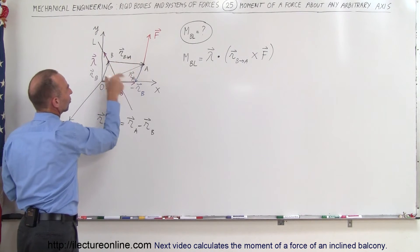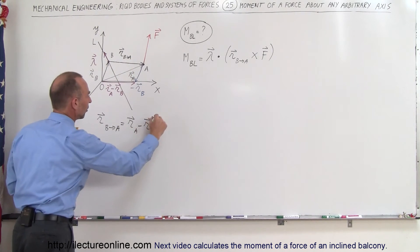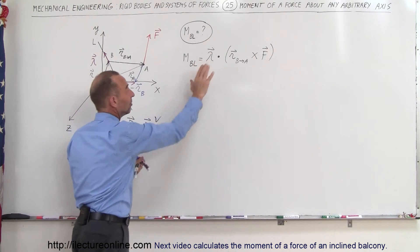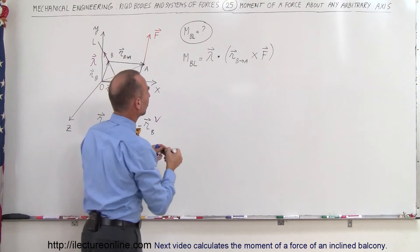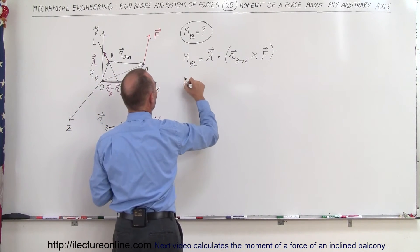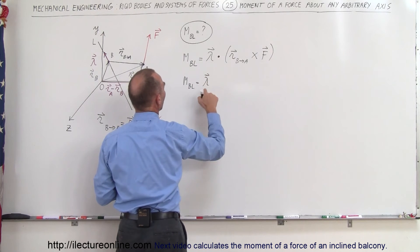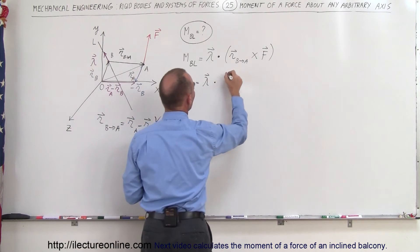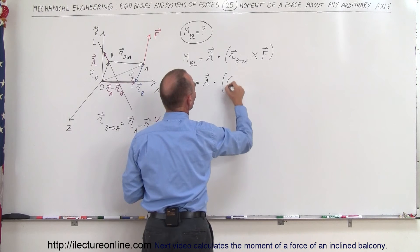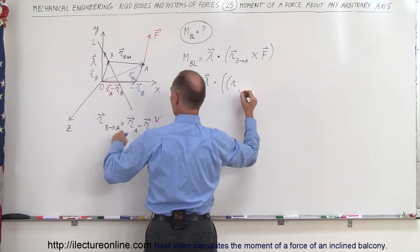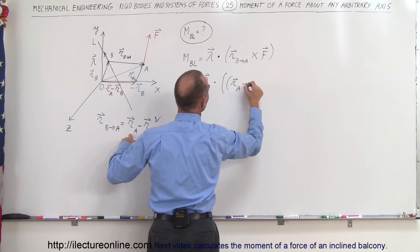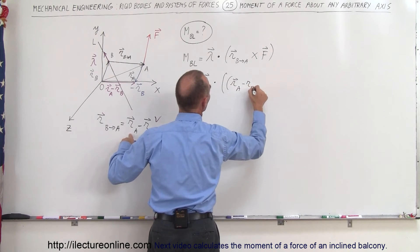This is the exact same vector just in a different location, so this does indeed check out. That means we can write the expression as: M_BL equals the unit vector along the arbitrary axis, dotted with the quantity R_A minus R_B.